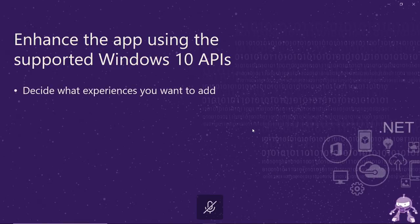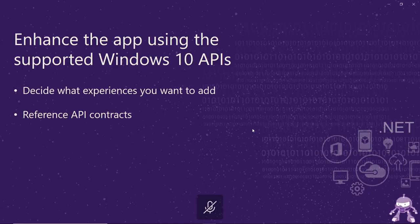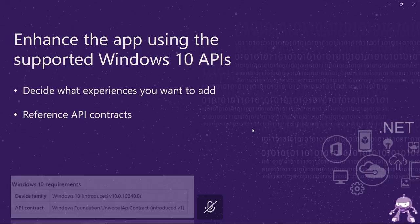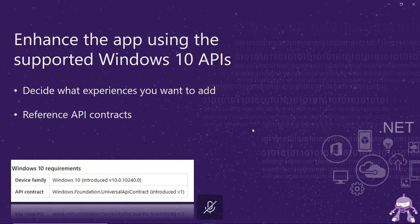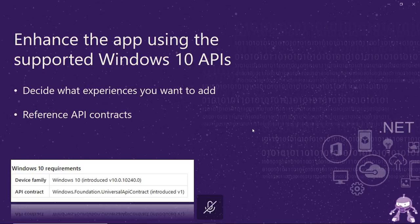Before you decide to call a Windows 10 API, I suggest you check if that API or functionality already exists in the WPF or WinForms world. When you decide which API you need from Windows 10, I suggest you check the reference API contracts. The reference API contracts give you information about the version in which the API was introduced, the version of Windows, and what reference you need to have. For example, the API contract here is Windows Foundation Universal API Contract. After you've found your API, you simply need to call it.